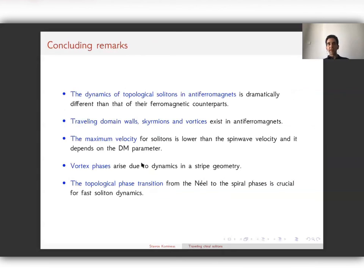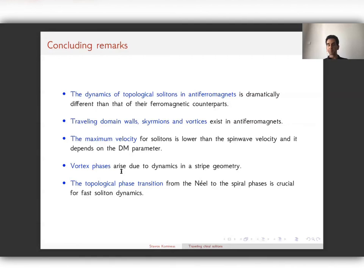The conclusions are that the dynamics of topological solitons in antiferromagnets is dramatically different from their ferromagnetic counterparts. Traveling domain walls, skyrmions, and vortices exist in antiferromagnets with similar properties, but with a maximum velocity lower than the spin wave velocity that depends on the DM parameter. We find a vortex chain phase arising from dynamics in the stripe geometry, absent in the 1D case and in the full 2D problem. The topological phase transition from the Néel to the spiral phases is the crucial element for understanding fast soliton dynamics.